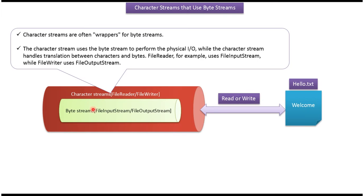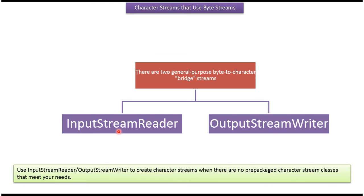Character streams use byte streams to perform physical input/output operations, while character streams handle the translation between characters and bytes. There are two general-purpose byte-to-character bridge streams: the first one is InputStreamReader, and the second one is OutputStreamWriter.